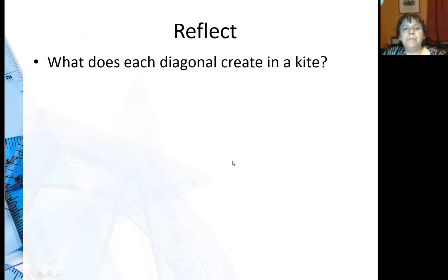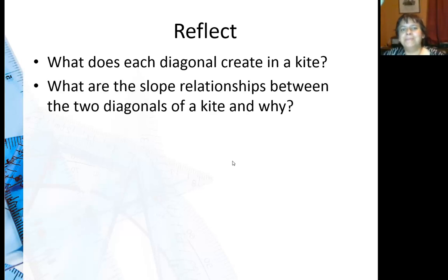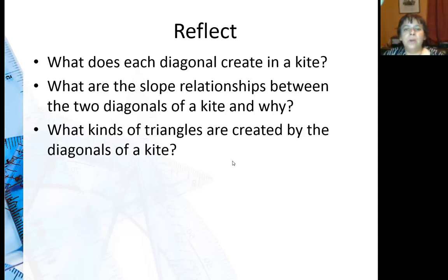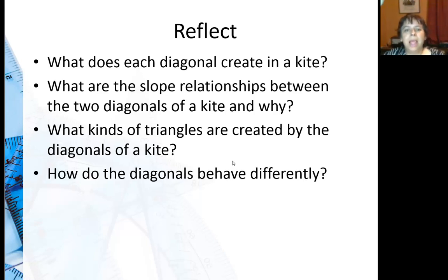So for further reflection, what does each diagonal create in a kite? One of them cuts the kite in half. The other one creates isosceles triangles. And you put them together and you have congruent right triangles. What are the slope relationships between the two diagonals of a kite and why? Well since they're perpendicular, their slope should be negative reciprocals. What kinds of triangles are created by the diagonals of a kite? Well again, we said one does isosceles triangles, not congruent. And one does congruent triangles. And how did the diagonals behave differently? Again, kind of going back to that previous question.